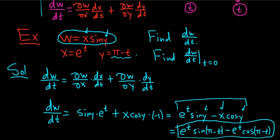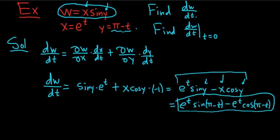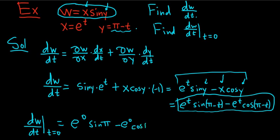Now we're supposed to plug in zero, so let's go ahead and do that. So dw dt at the moment when t is equal to zero, is equal to. So we're going to plug in zero for the t's. So we get e to the zero sine of, and then t is zero, so sine of pi minus, and then we get e to the zero cosine of pi.